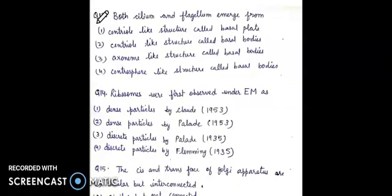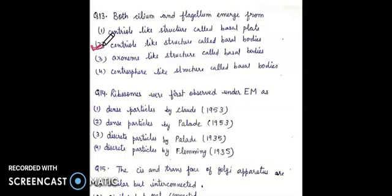Question 13: both cilium and flagellum emerge from — 1. centriole-like structure called basal plate; 2. centriole-like structure called basal bodies; 3. exonym-like structure called basal bodies; 4. centrosphere-like structure called basal bodies. The right answer is second: both cilium and flagellum emerge from centriole-like structures called basal bodies.